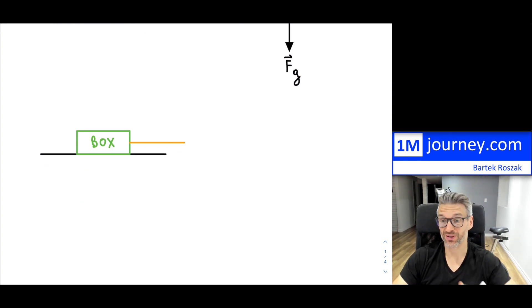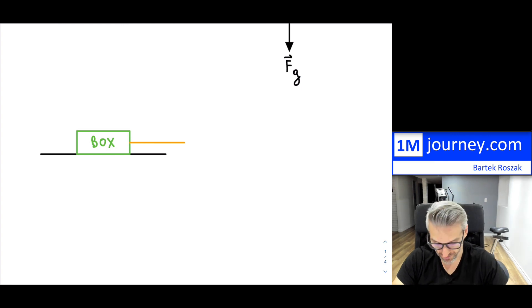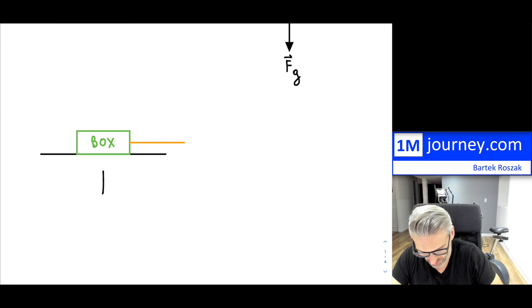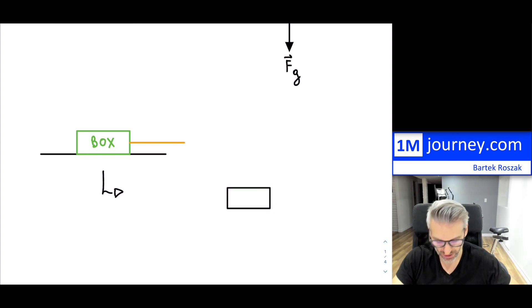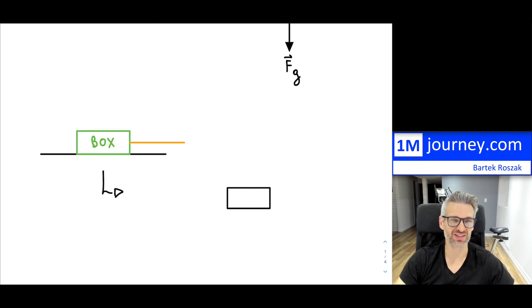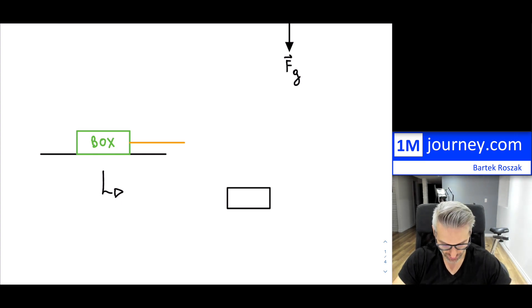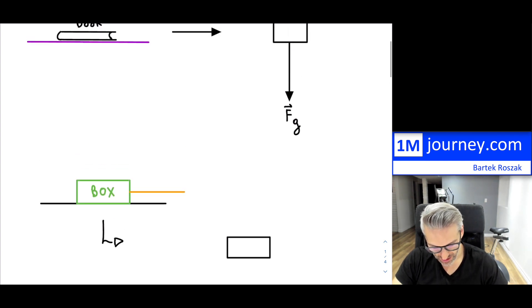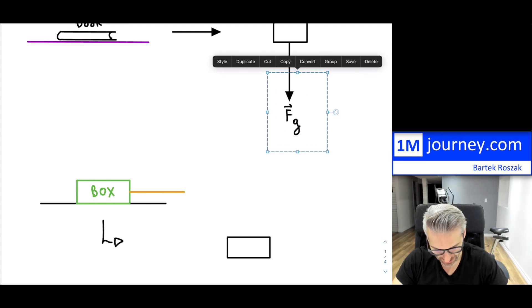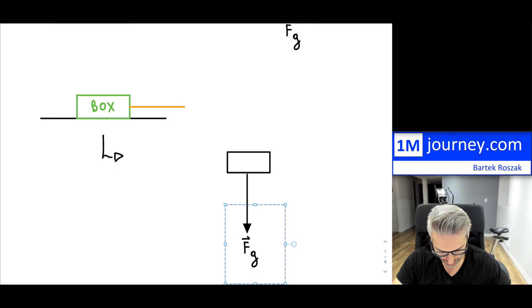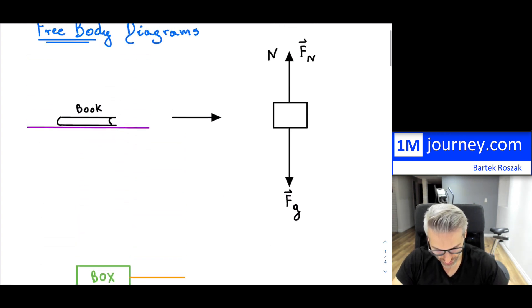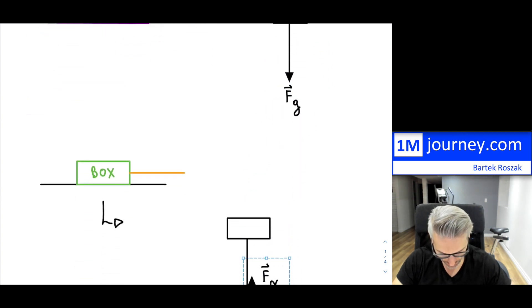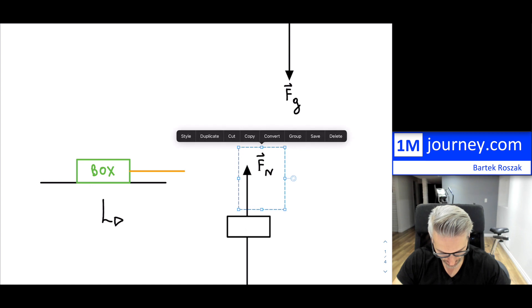Here's another illustration. Let's imagine we have a box and someone is actually pulling it — maybe with a rope. How would we translate this into a free body diagram? Again, you draw the box as a square, which designates the object of interest, and it's kind of at the center that we put all the different forces. So we would still have the force of gravity acting downward, and the normal force is still present as well.